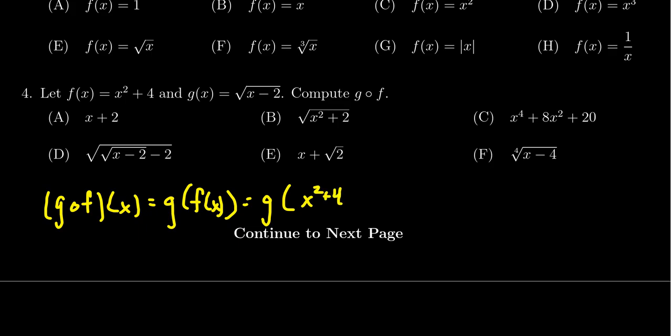In the formula for g of x, everywhere we see an x we're going to substitute that with an x squared plus four. So that gives us the square root of x squared plus four minus two.